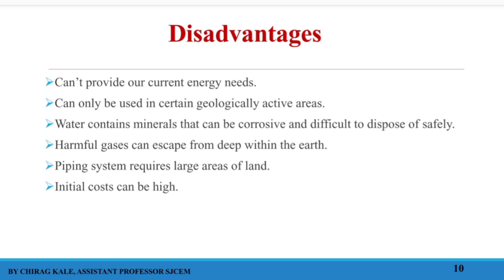The disadvantages are: it cannot provide our current energy needs as the source is limited and it is available only in geologically active areas near tectonic plate boundaries — it cannot be used everywhere. Water extracted contains corrosive materials and dissolved gases which can harm the system. The gases are very reactive and releasing them directly into the environment is harmful. A piping system is required and the initial capital cost is very high.